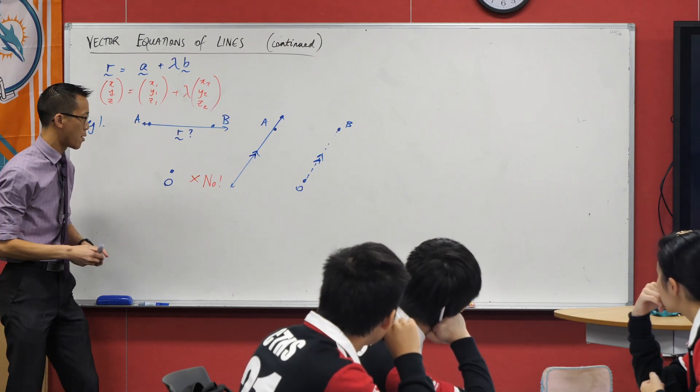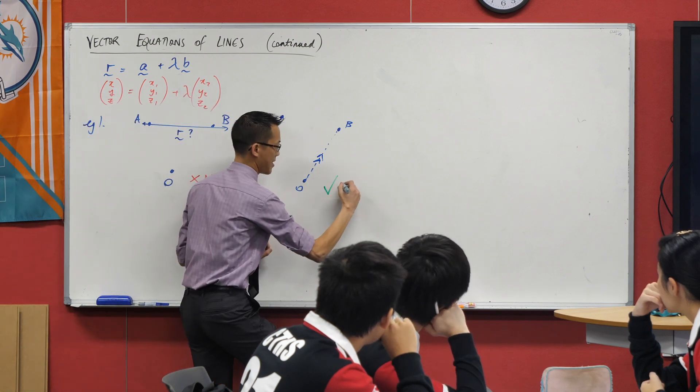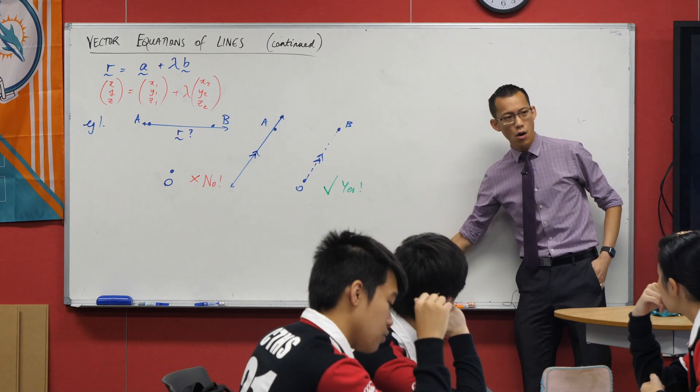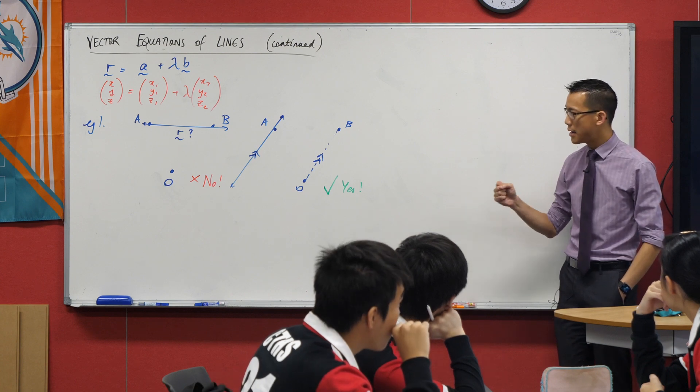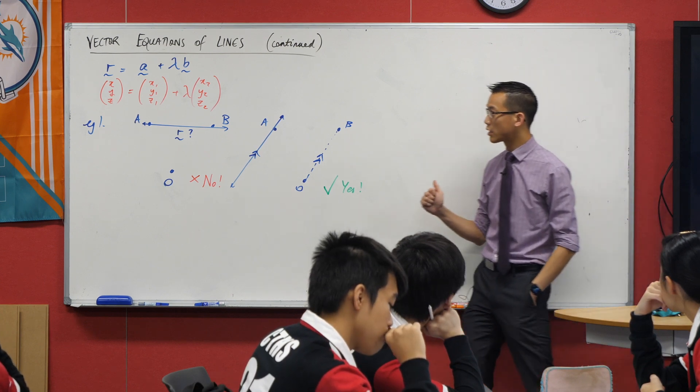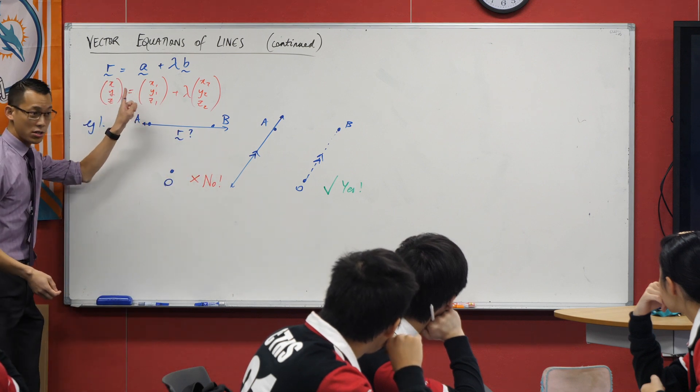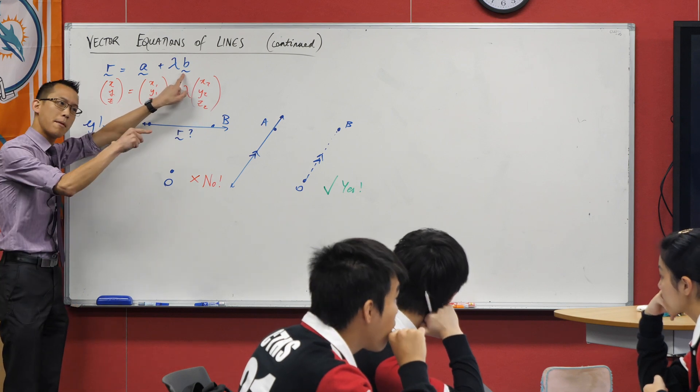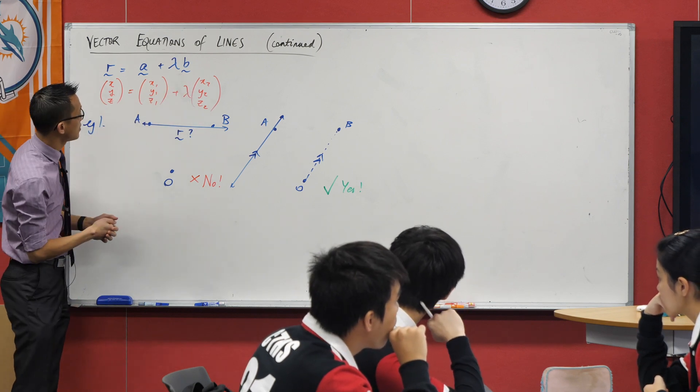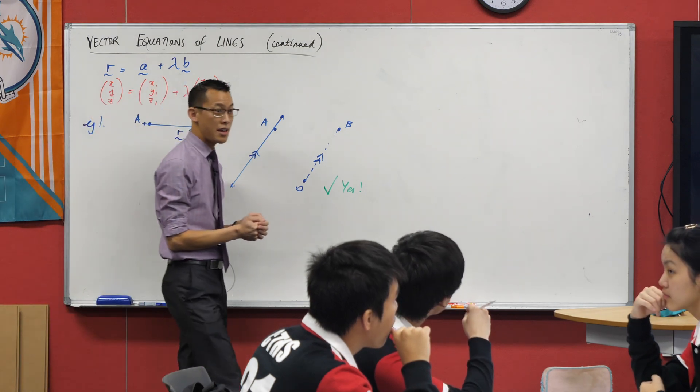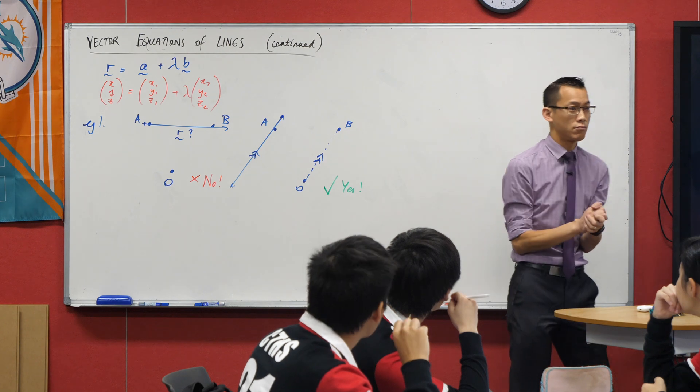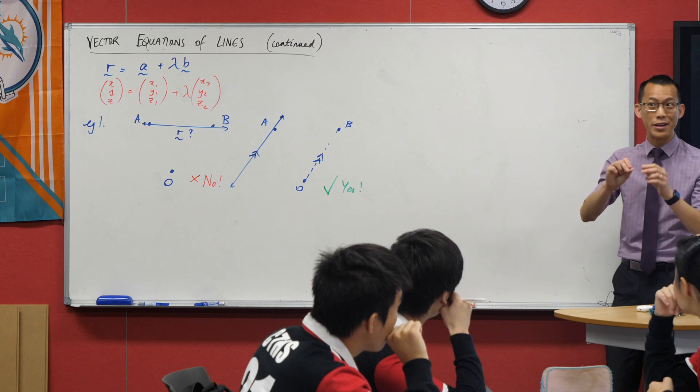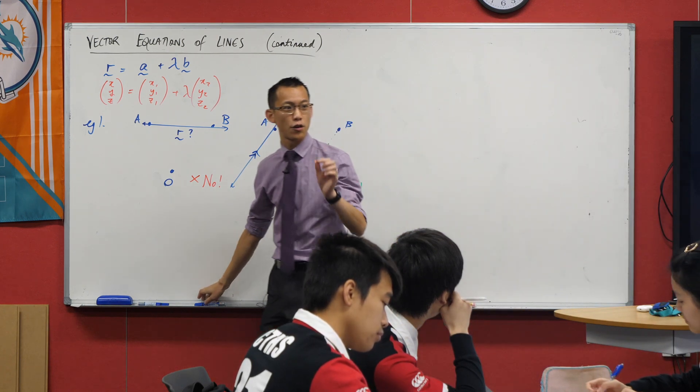Let's go ahead and put OB on here. There's OB. And I want something through A that's parallel to that. Something like that. Let's just mark these in as parallel lines. Does this make sense? Having given you this, take a moment and see if you can work out what the vector equation of the line would be.